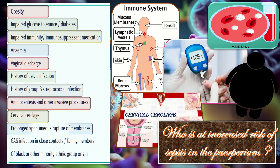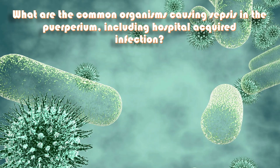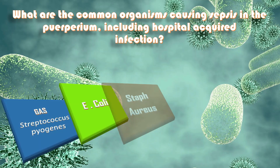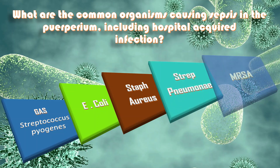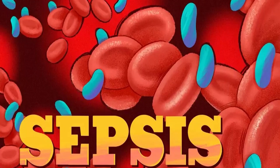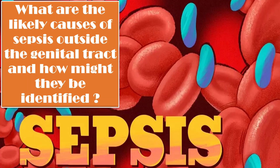Additional risk factors include cervical cerclage, prolonged spontaneous rupture of membranes, group A streptococcal infection in close contacts or family members, and black and other minority ethnic group origin. The major pathogens causing sepsis in the puerperium are GAS (also known as Streptococcus pyogenes), E. coli, Staphylococcus aureus, Streptococcus pneumoniae, MRSA, and Clostridium septicum among other species.